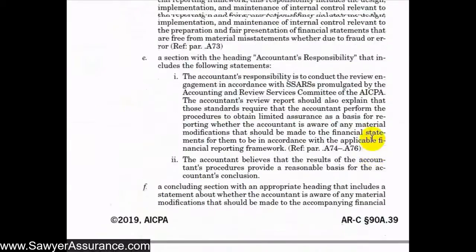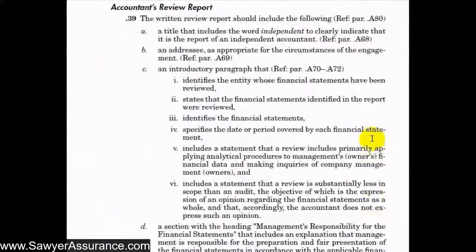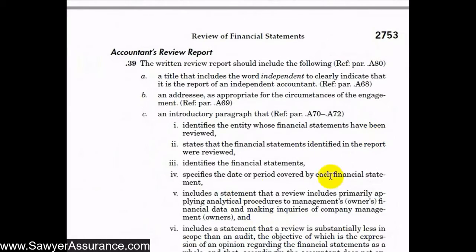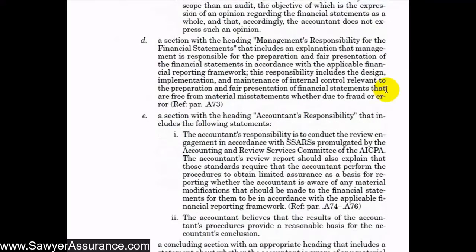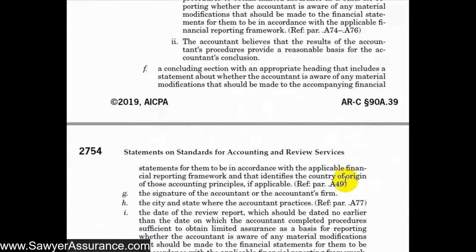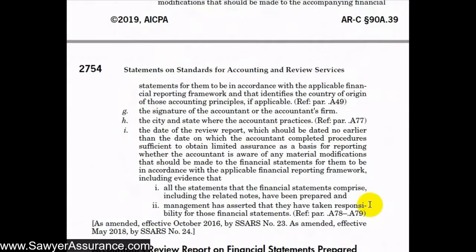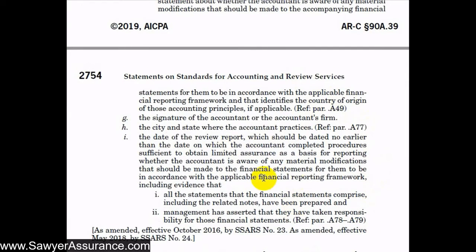There is explanatory material that goes into more detail on how to include each of these statements into our review report. We can look at sections A-68, A-69, A-72, A-80, A-73, A-49, A-77, and through A-79 for a better understanding of how to include these statements in our review report.